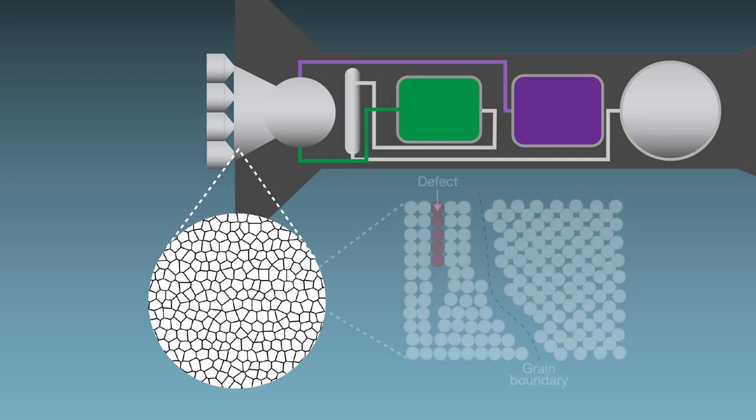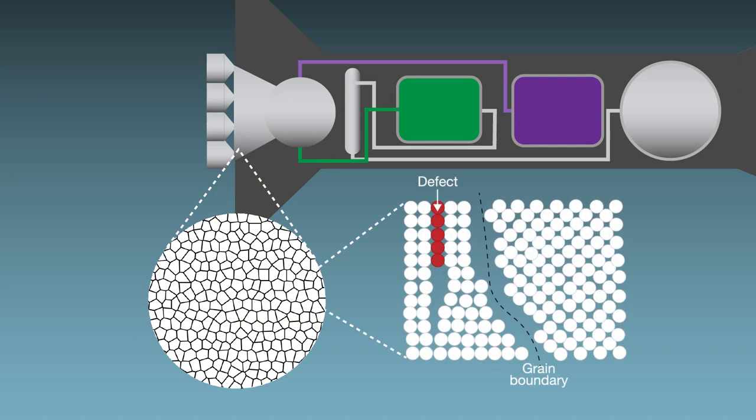Like tiny brick walls, the boundaries between these microscopic grains help stop the motion of defects that could lead to cracking.